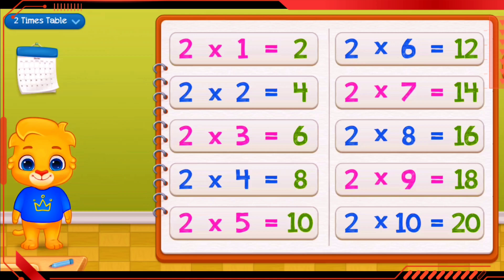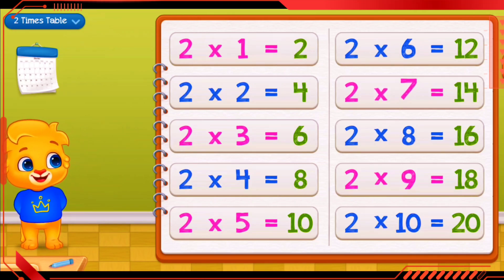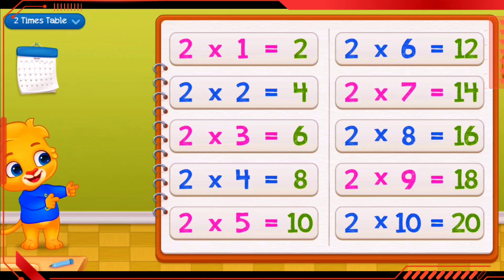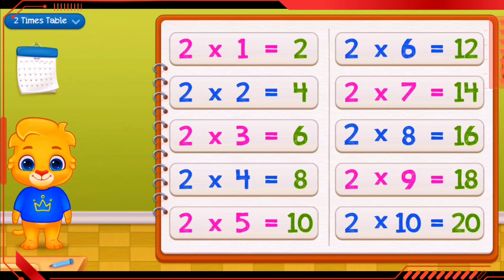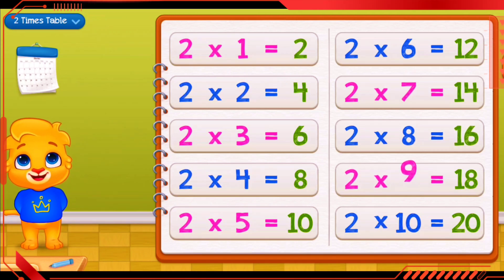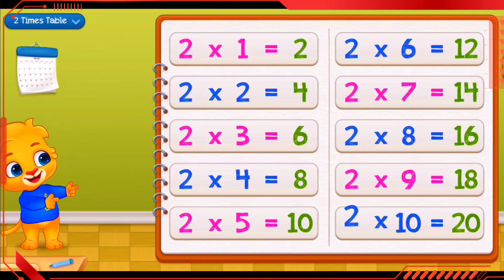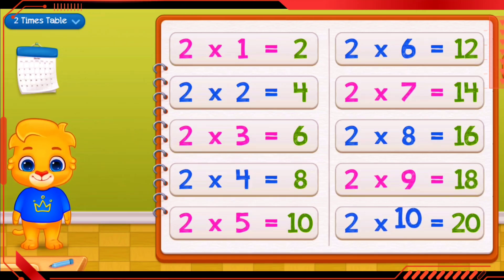2 times 5 equals 10. 2 times 6 equals 12. 2 times 7 equals 14. 2 times 8 equals 16. 2 times 9 equals 18. 2 times 10 equals 20.